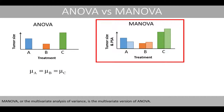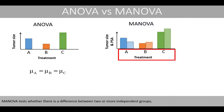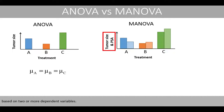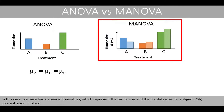MANOVA, or the multivariate analysis of variance, is the multivariate version of ANOVA. MANOVA tests whether there is a difference between two or more independent groups, based on two or more dependent variables. In this case we have two dependent variables, which represent the tumour size and the prostate-specific antigen concentration in the blood.